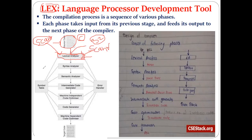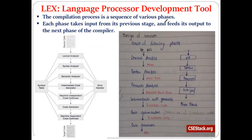Rules are also defined for identifiers or variables — for example, an identifier should always begin with a letter, not a digit. If you write an identifier starting with a digit, you get an error: invalid identifier. Such things can easily be checked once you generate the lexical analyzer with the Lex tool. We will now discuss in detail the language processor development tool — Lex — and how to generate the lexical analyzer using it.